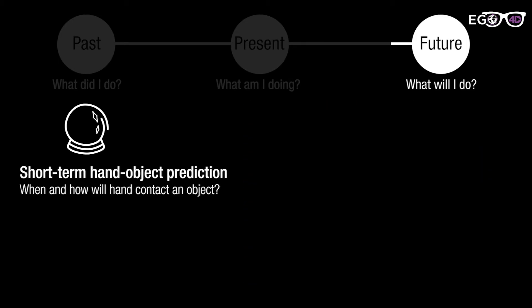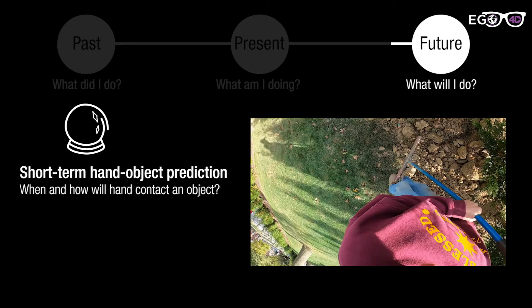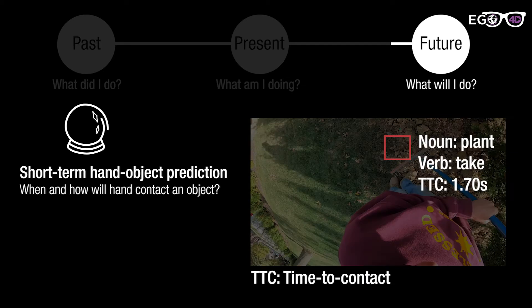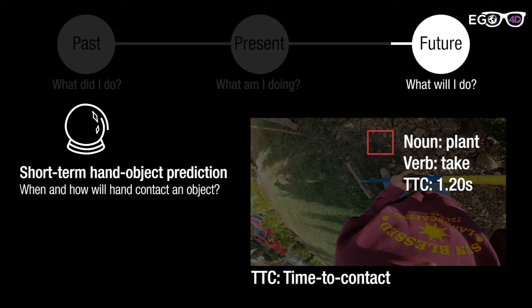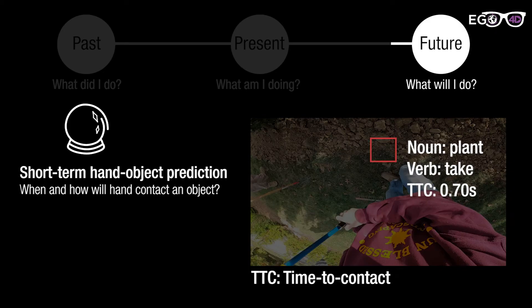The short-term hand-object interaction anticipation task is to recognize which object and when and how the hand will contact with the object. For instance, the camera wearer is about to grasp grass on the ground. An algorithm is expected to predict the action, object, and time to contact.